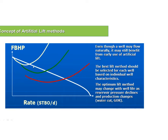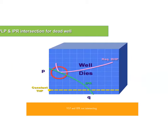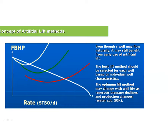From these charts, we understand it's not only about making a dying well produce — it's also about increasing the rate of the well. Imagine a well producing only 200 barrels which is not economical. I can introduce artificial lift to change the outflow curve so it produces 1,000 or 2,000 barrels. With artificial lift, I can either make a dying well produce, or increase the rate of an existing well to be more economical.